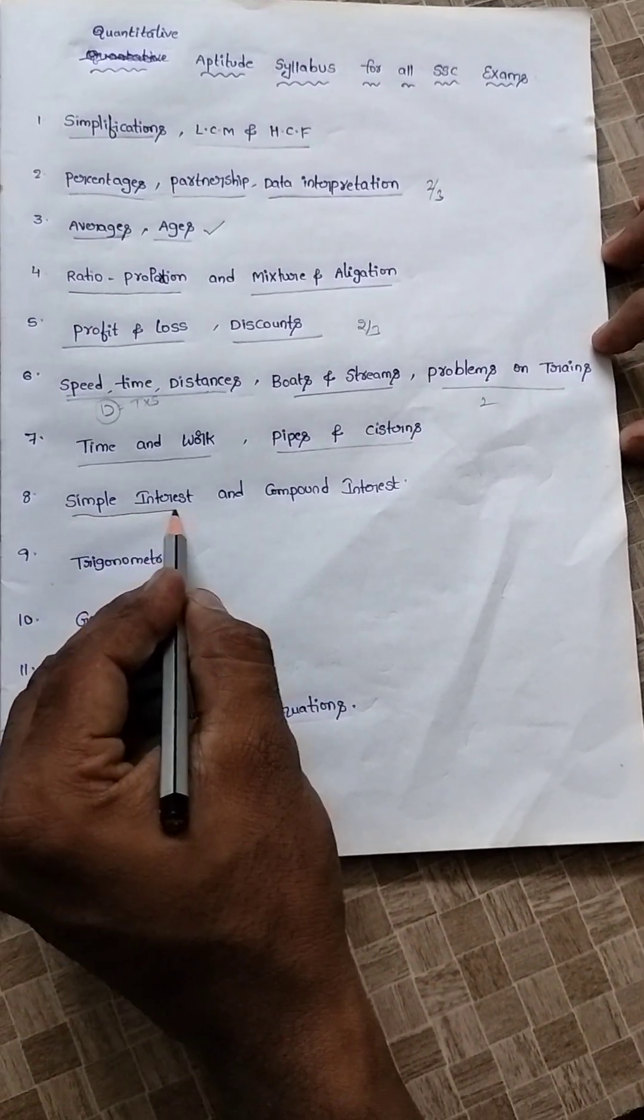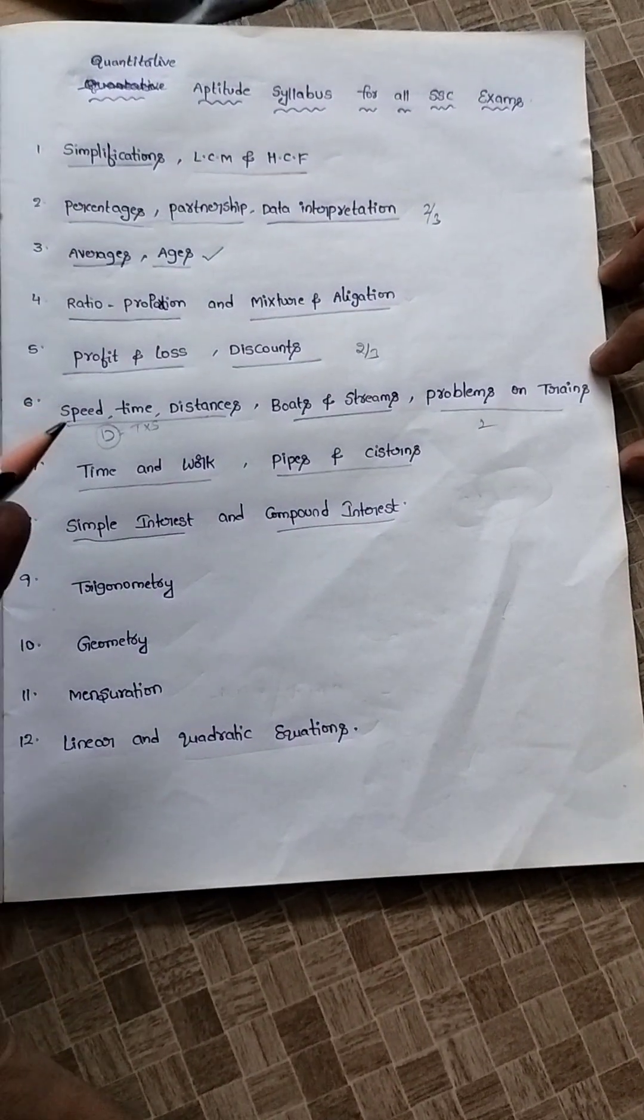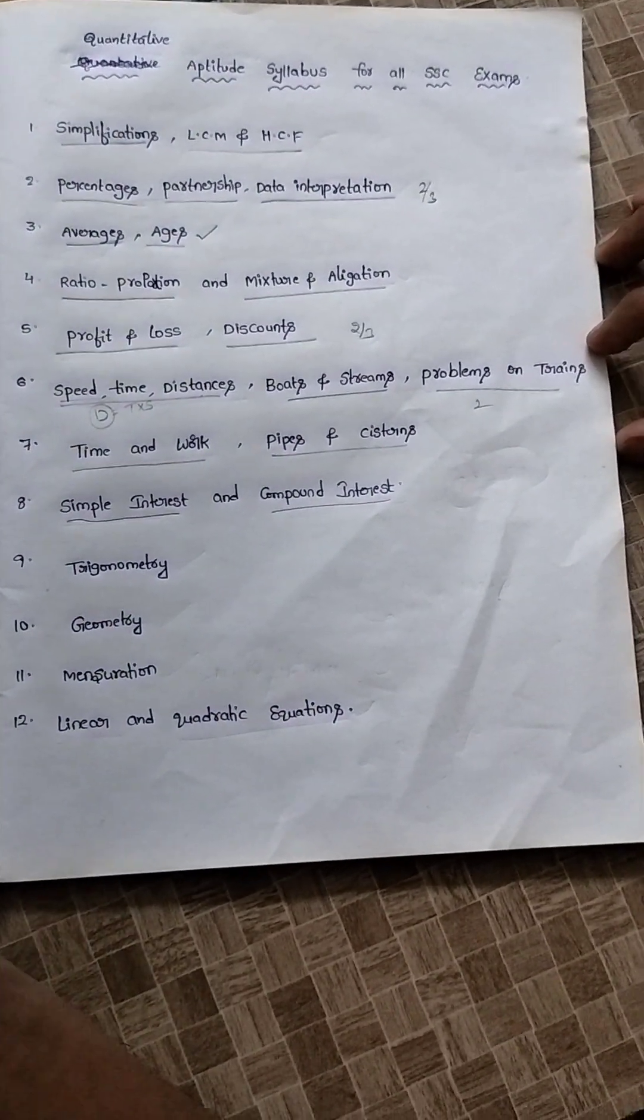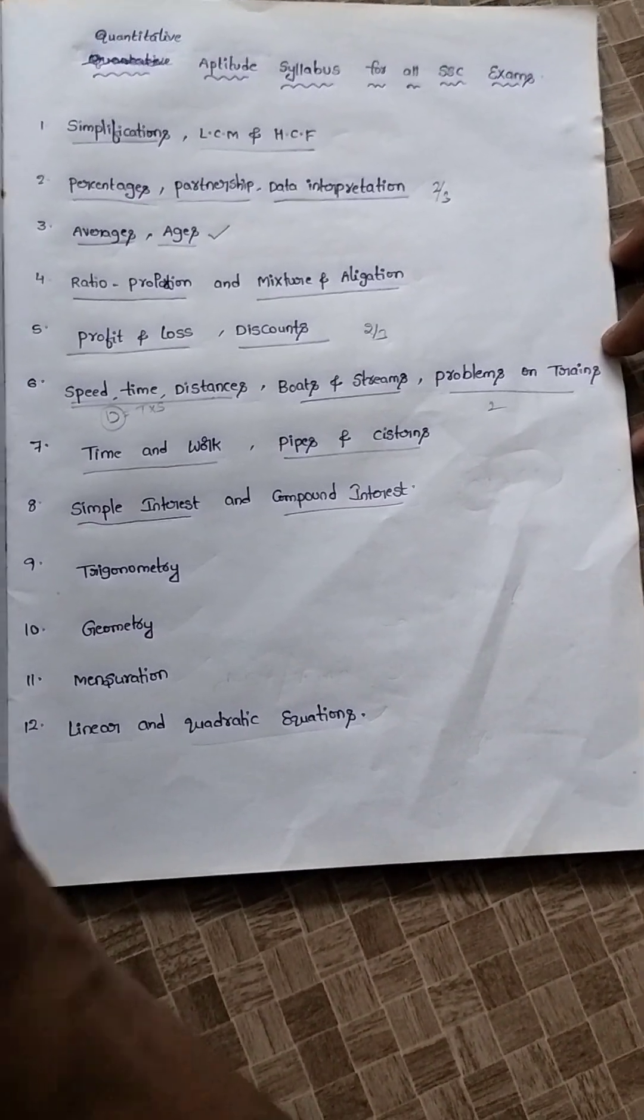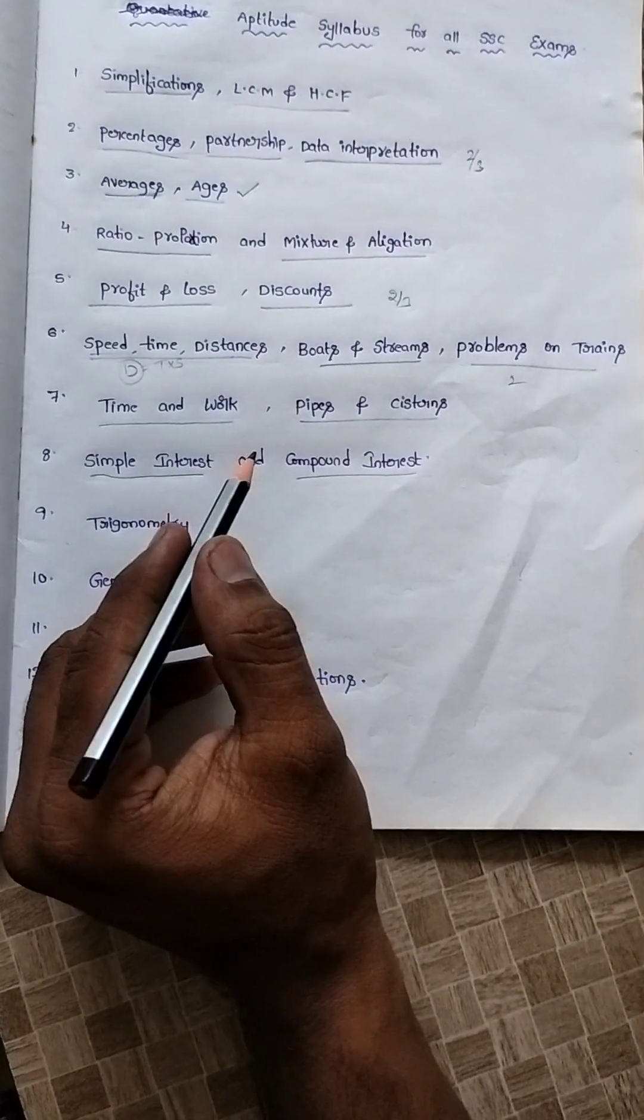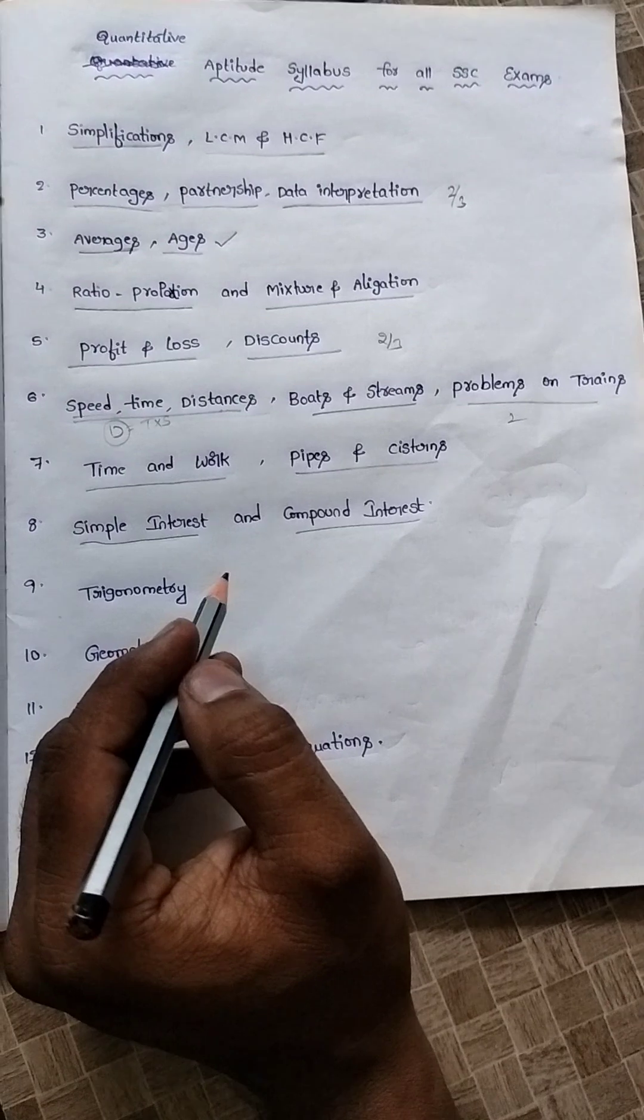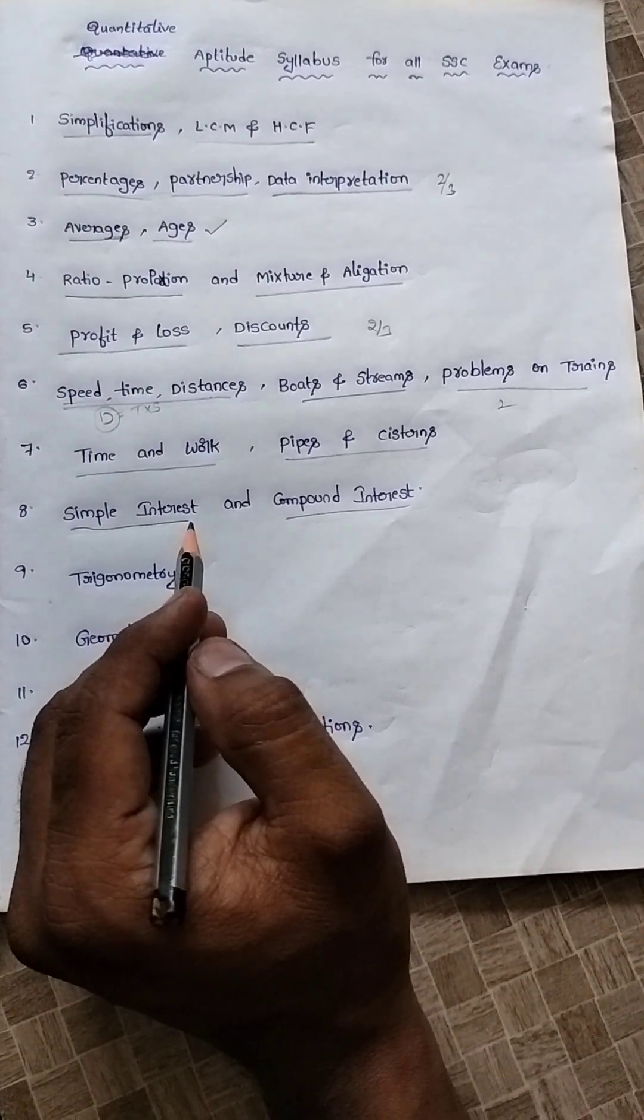Then coming to simple interest and compound interest. Nowadays in competitive exams, for time-killing purposes, they are asking both simple interest as well as compound interest in one sum. We are having so many shortcuts and tricks. I will explain in the next classes very easily and within accurate time.